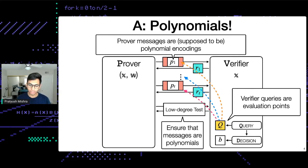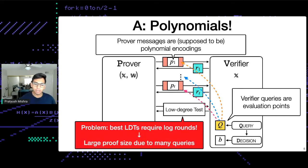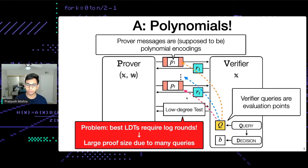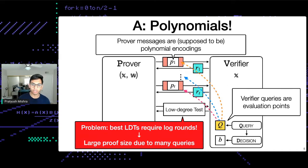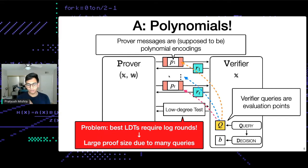This is nice, but it's not quite satisfactory, because when we do these low-degree tests — even the best ones today, like the FRI low-degree test — they're quite expensive. They require a logarithmic number of rounds in the degree of the polynomials, and result in a lot of queries because the verifier also has to query these polynomials at many locations. So what can we do about it?